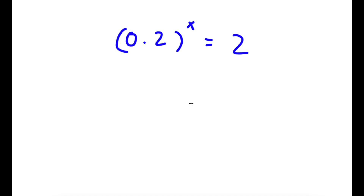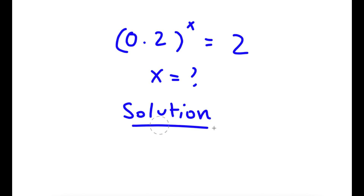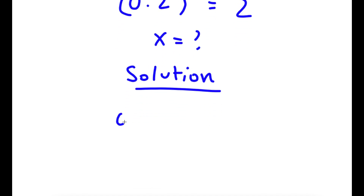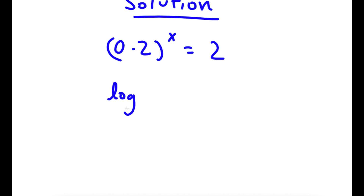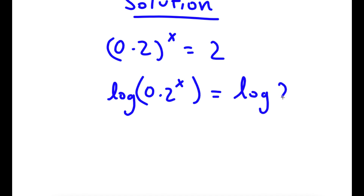In this problem, I have 0.2 to the power of x is equal to 2. I want to find the value of x. For my solution, I start with 0.2 to the power of x is equal to 2. Now I'm going to take the log on both sides. So I have log 0.2 to the power of x is equal to log 2.